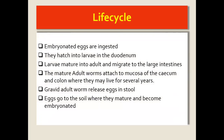The life cycle is quite similar to enterobiasis, except there is no auto-infection. The embryonated eggs, released into the soil, end up in the mouth by various routes. The eggs hatch into larvae in the small intestines, and then the larvae mature into adult worms and migrate down to the large intestine, where they attach to the mucosa at the cecum and colon, where they release their eggs.